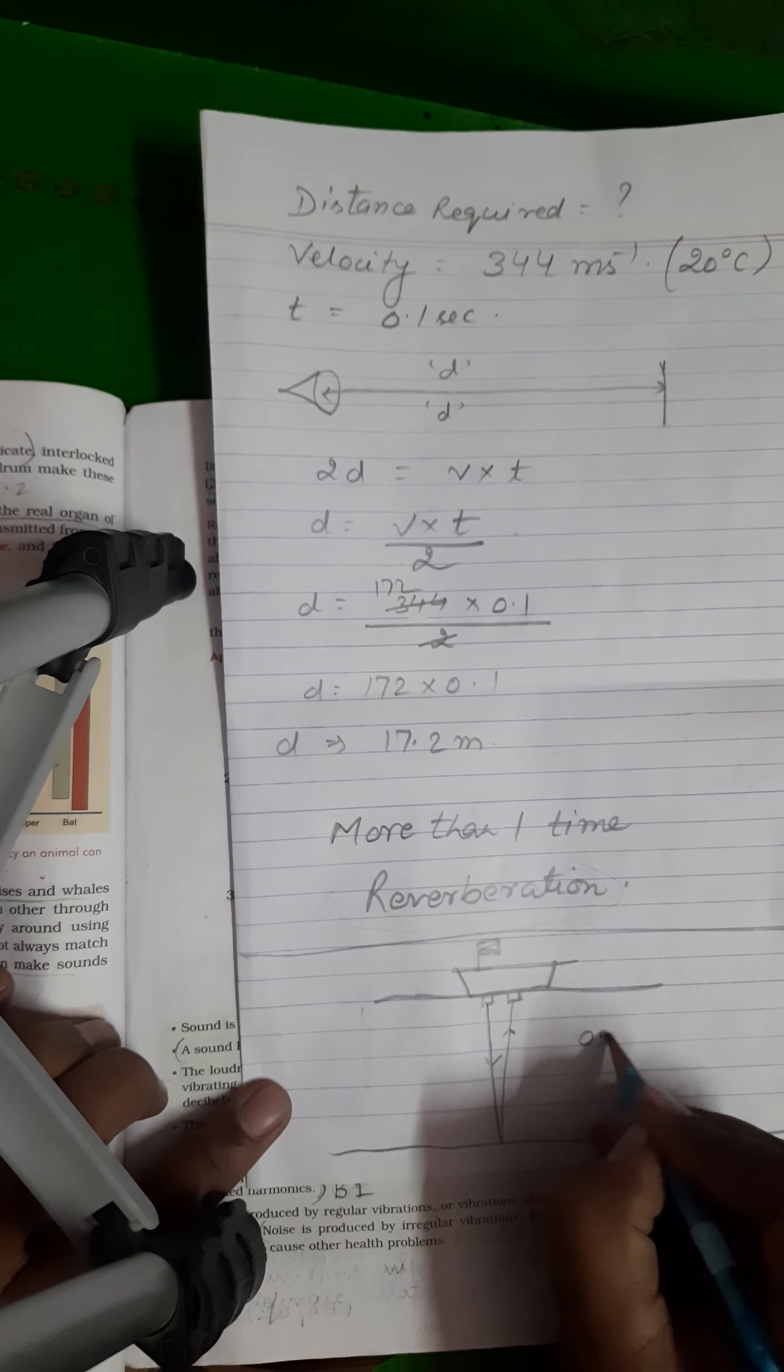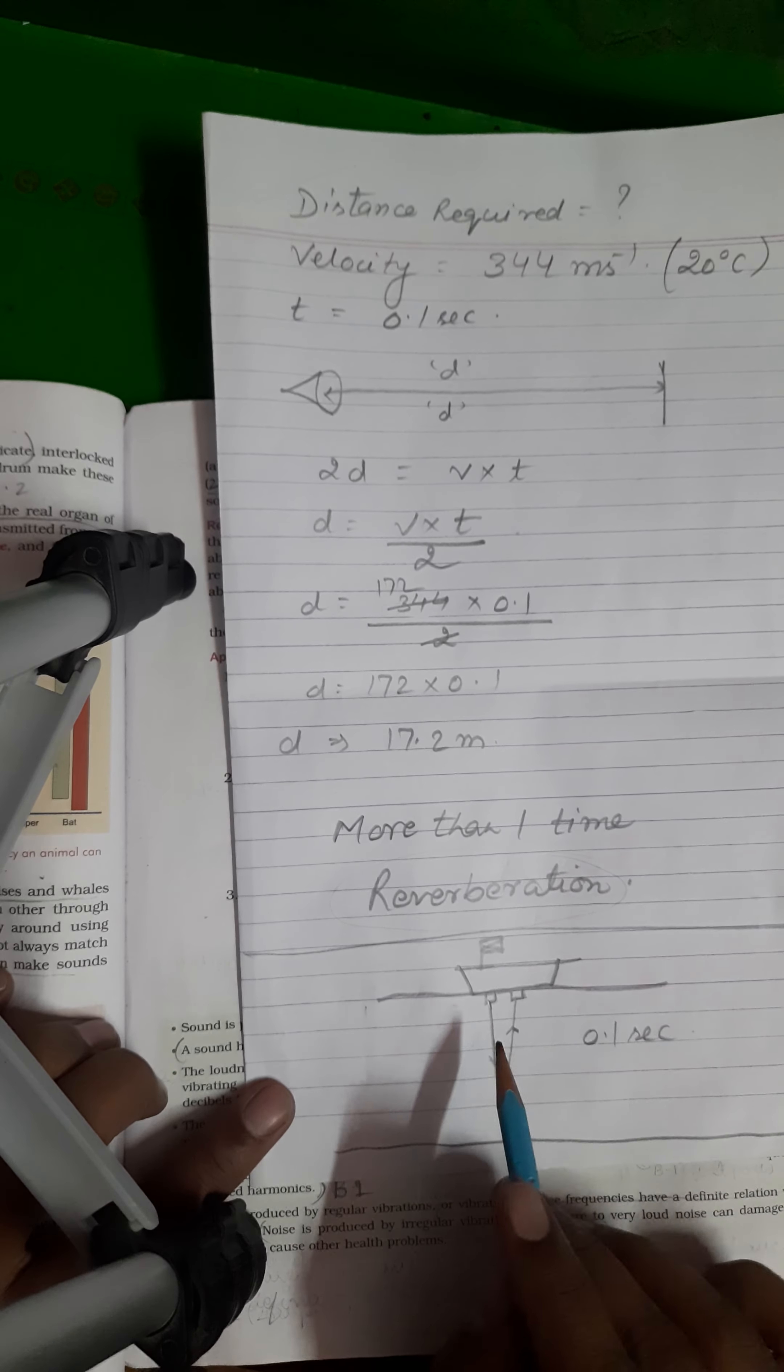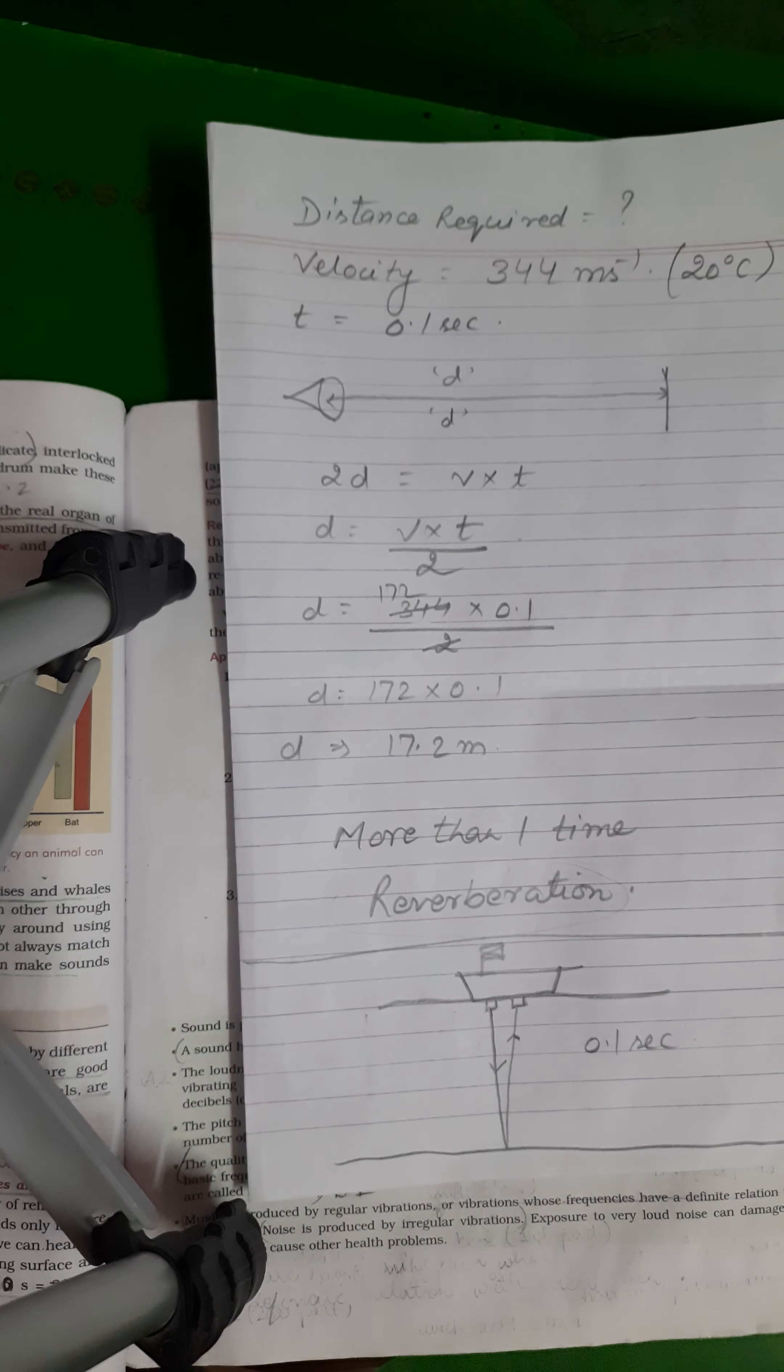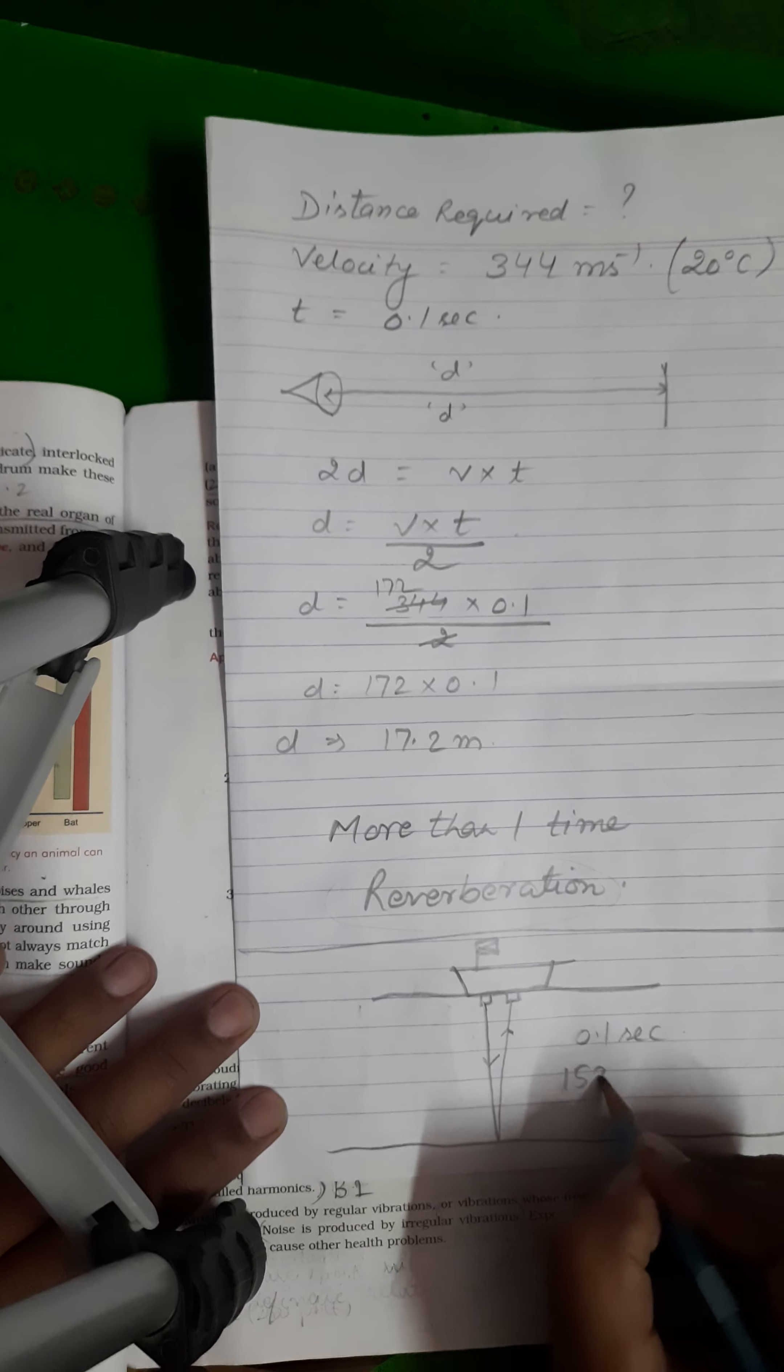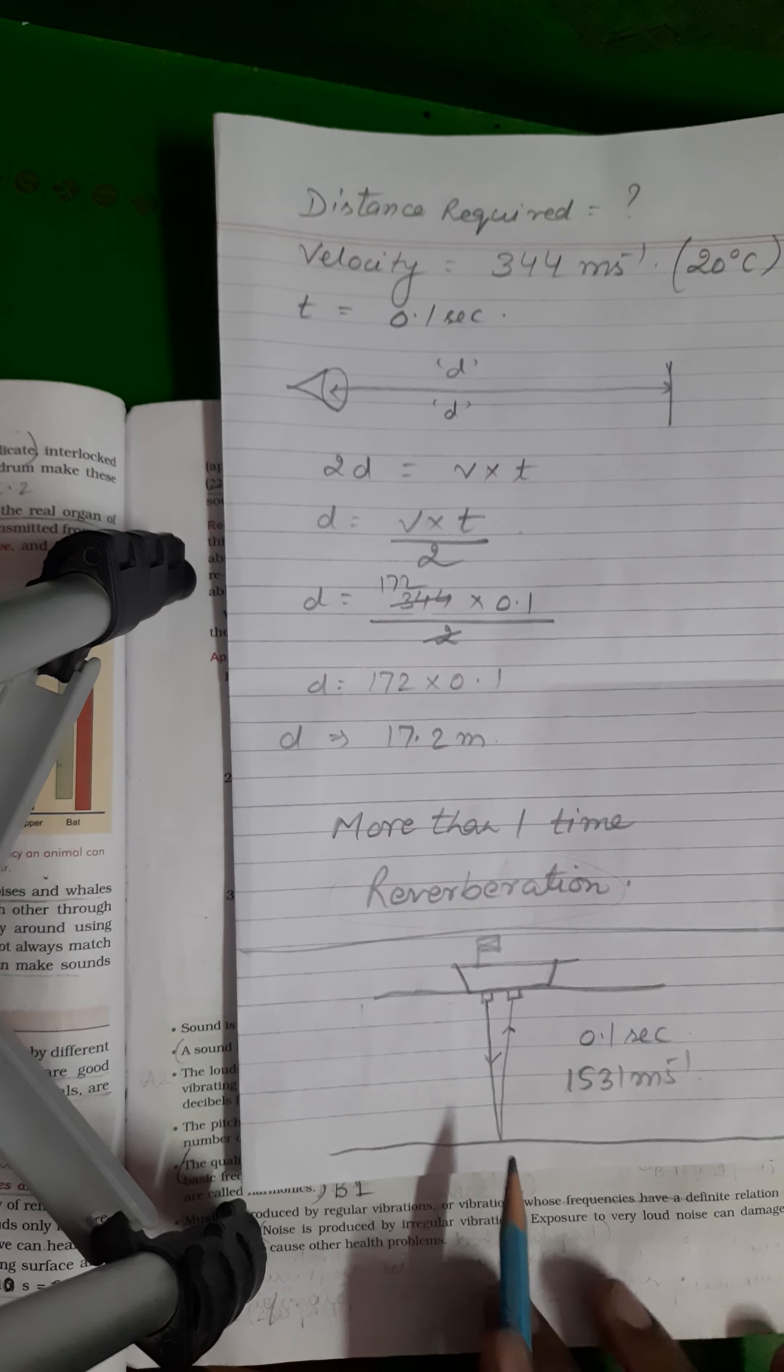The time is 0.1 second because it is a type of an echo. Reflection is taking one time. So the time of perception of this sound is also 0.1 second. The speed of sound in seawater is 1531 meter per second. So we can easily calculate the distance.